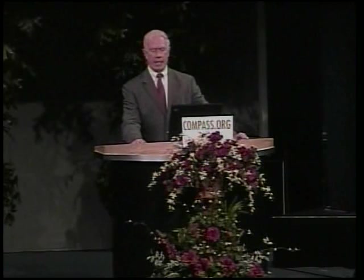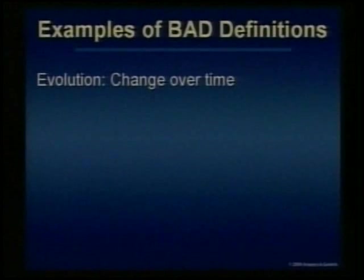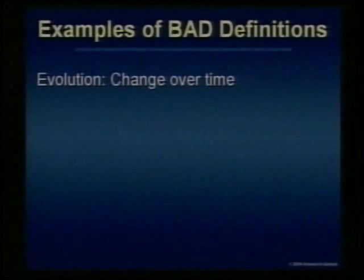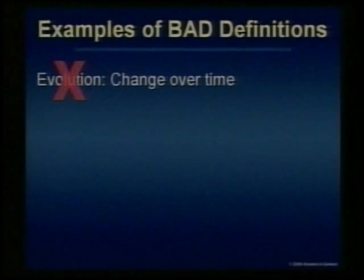Let me show you some examples of bad definitions I'm finding in textbooks. Number one: evolution is change over time. Well, every one of you just evolved, because every one of you just moved, breathed — and that's change over time, isn't it? Is that a very clear definition of anything? No, it is not. But that's what our students are being taught. That is an invalid definition because it includes every single thing in the universe.